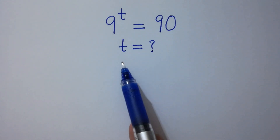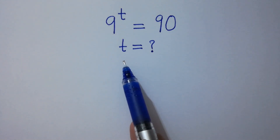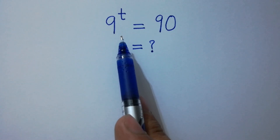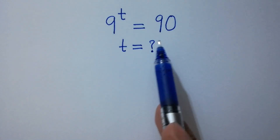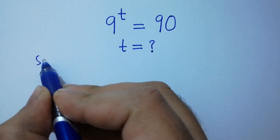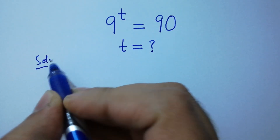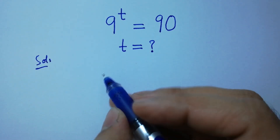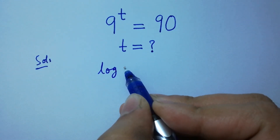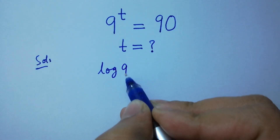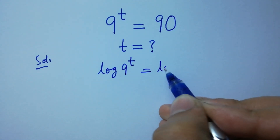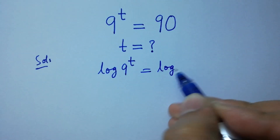Hello friends. Find the value of t if 9 to the power t equals 90. Let's have a solution. Take log on both sides: log 9 to the power t equals log 90.